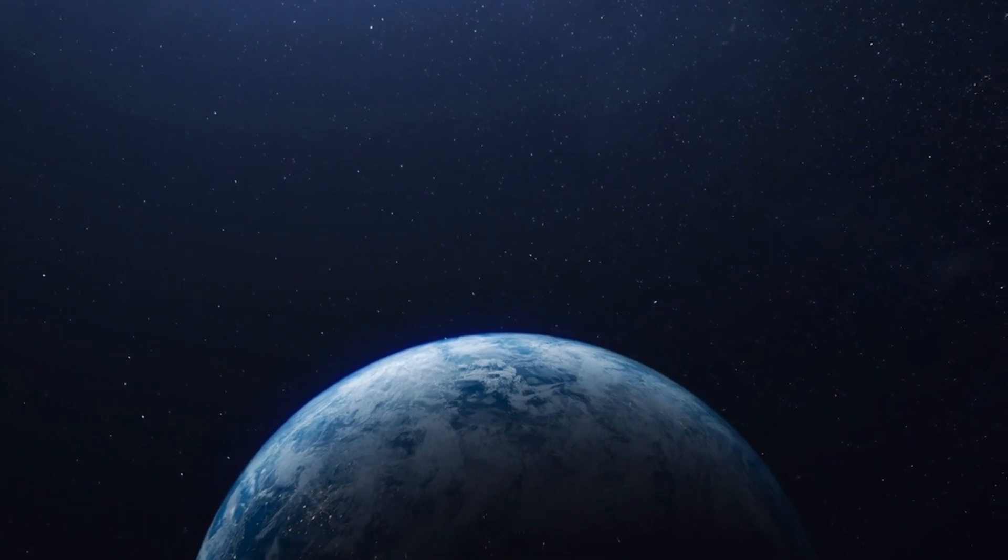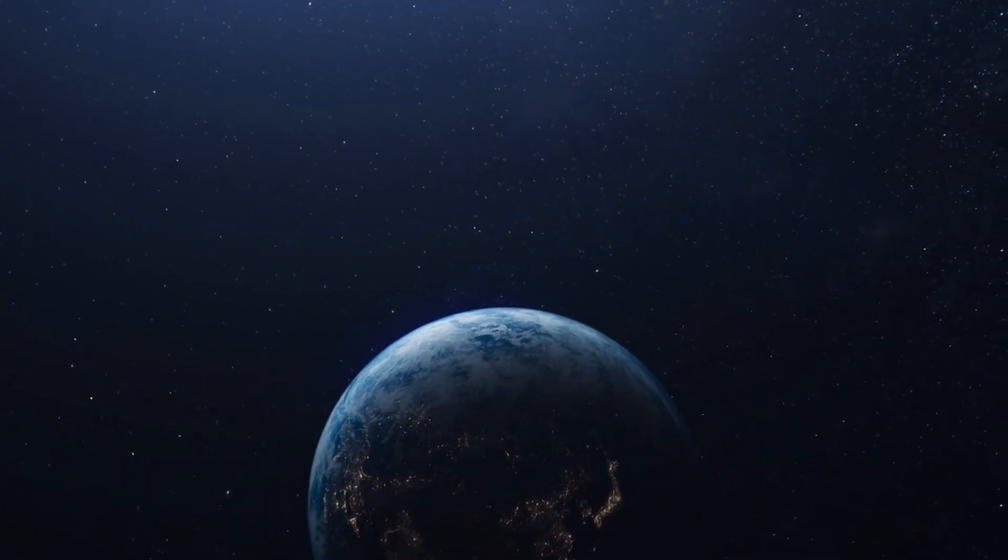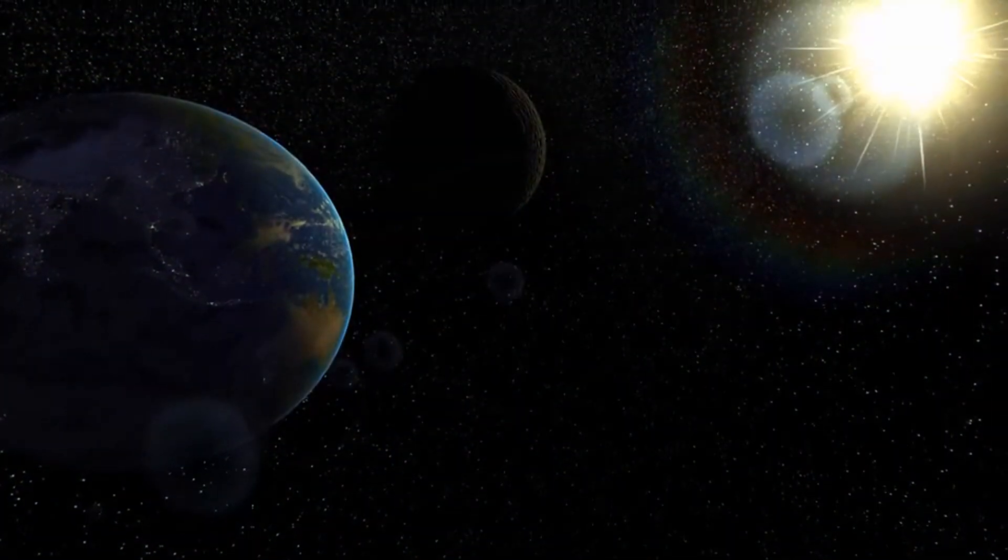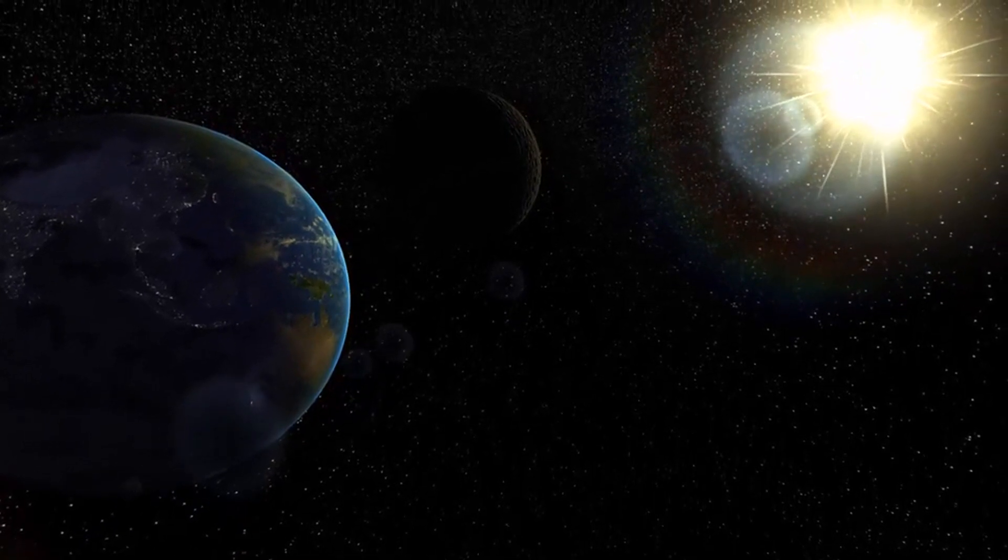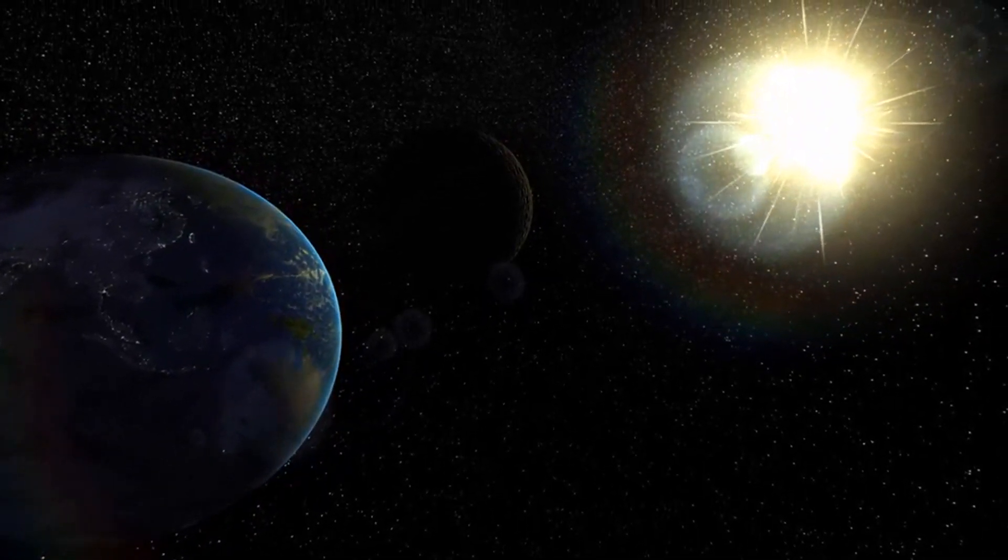These worlds always show the same face to their star, creating permanent faces of night and day. Gravitational interactions between planets and stars can gradually slow the planet's rotation until it exactly coincides with the orbital cycle.